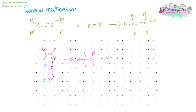So we're going to have Y negative. Y, because it has gained an electron, is going to have a lone pair of electrons, and these are going to be attracted to the carbocation. We are then going to end up with X and Y being attached across the double bond.